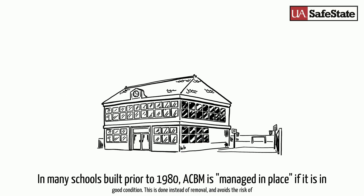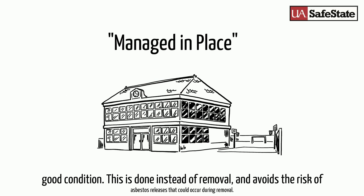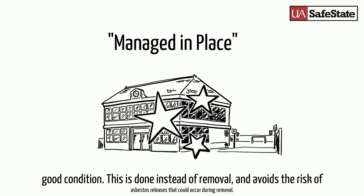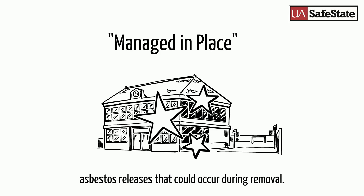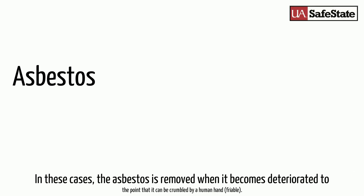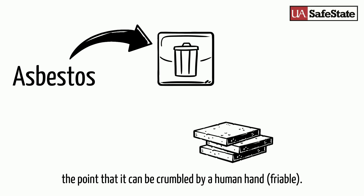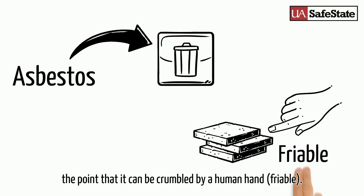In many schools built prior to 1980, asbestos containing building material is managed in place if it is in good condition. This is done instead of removal, and avoids the risk of asbestos releases that could occur during removal. In these cases, the asbestos is removed when it becomes deteriorated to the point that it can be crumbled by a human hand, otherwise known as friable.